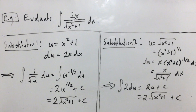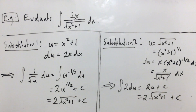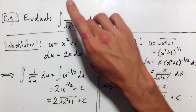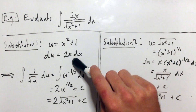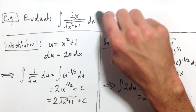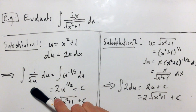I'd like to show an example where more than one substitution is possible. We've got the integral of 2x over the square root of x squared plus one dx. The straightforward approach is to let u equal x squared plus one, which is the thing underneath the radical. Upstairs we have the derivative of x squared plus one, which is two x. So if u equals x squared plus one, then du equals two x dx. I've got u under the radical, so this becomes the integral of one over the square root of u du.